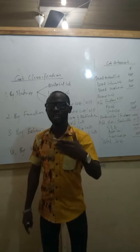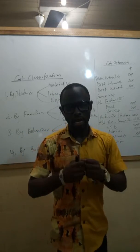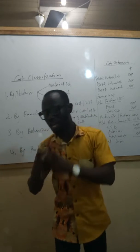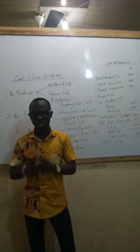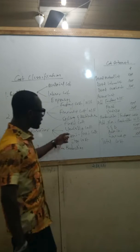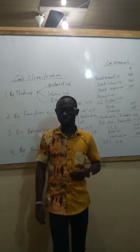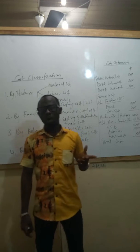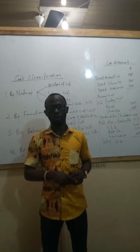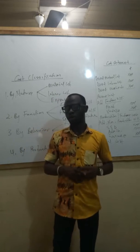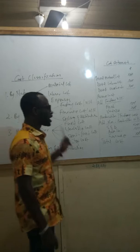Generally, variable cost varies with the output level: the more you produce, the more costs you incur; the less you produce, the less costs you incur. The third type is semi-fixed costs, which can also be called semi-variable costs — these are costs that are partly fixed and also variable at the same time.